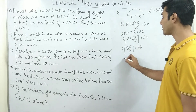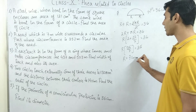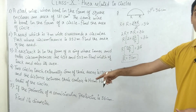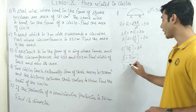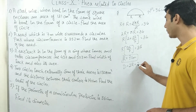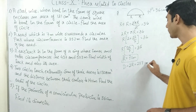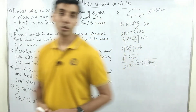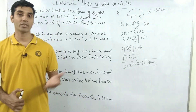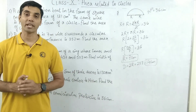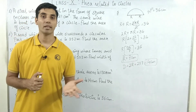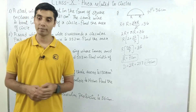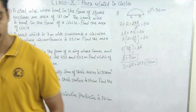The 36s cancel, so r = 7 centimetres. They asked for the diameter, so diameter = 2r = 2 × 7 = 14 centimetres. That's all. Keep watching for more videos to complete this topic. Thank you for watching — like it, share it, comment, and subscribe.